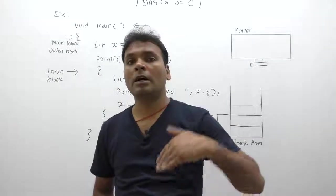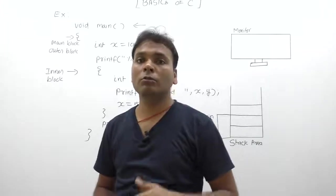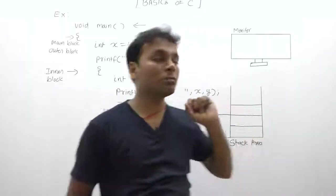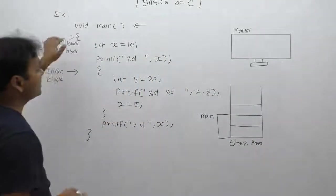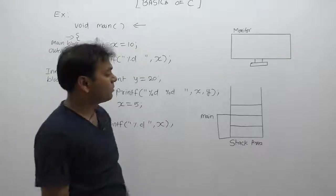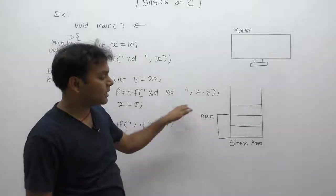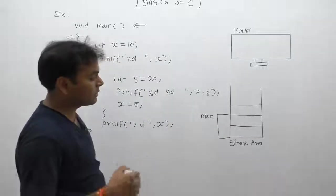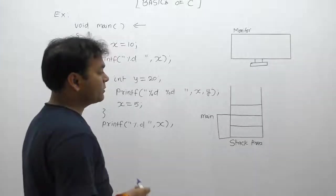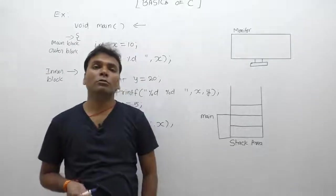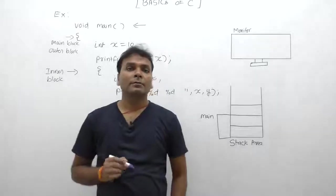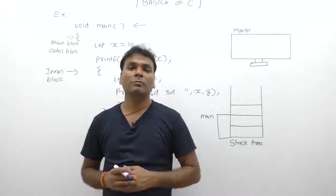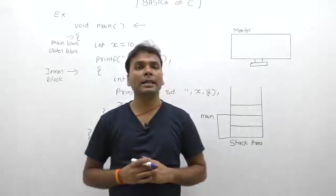During execution of any program, the program is loaded from hard disk to RAM. The whole executable code is stored inside the method area. When execution starts, with respect to any function, that function is stored inside the stack area. The purpose of loading a function inside the stack is to allocate memory space for its local variables.